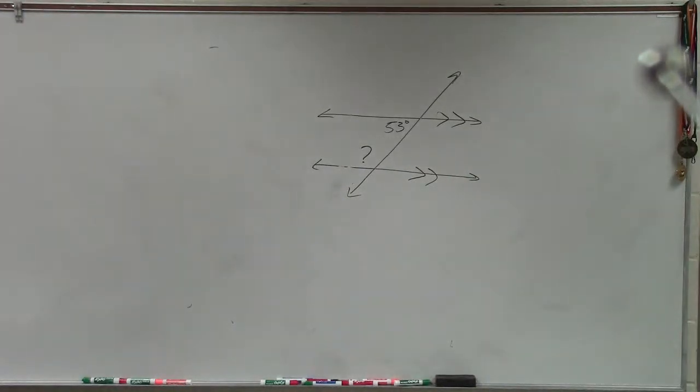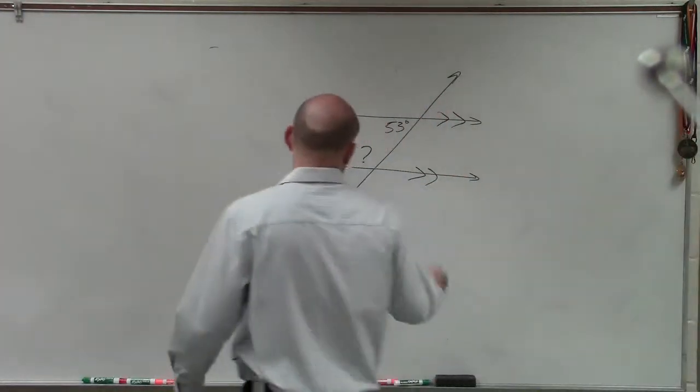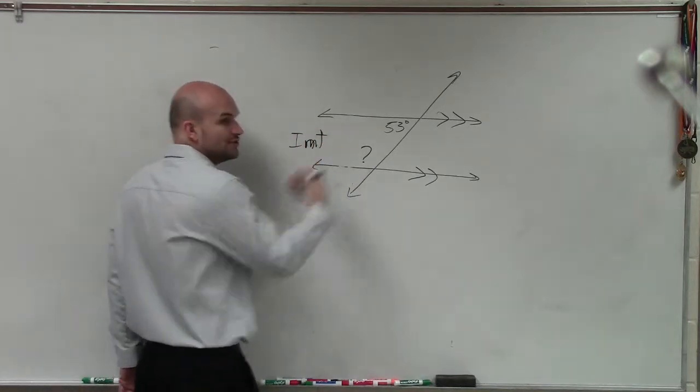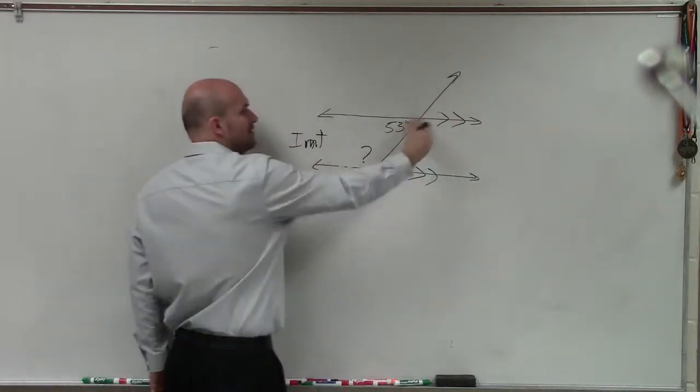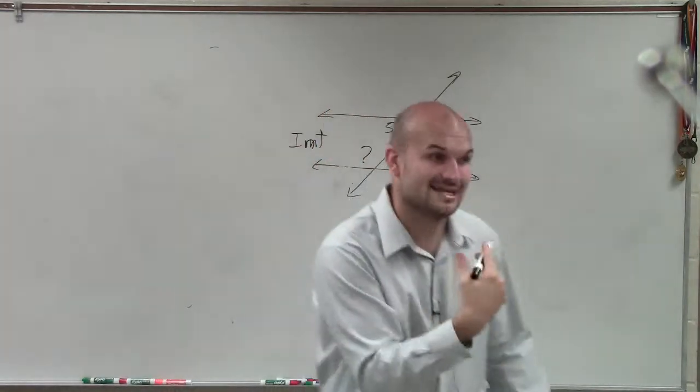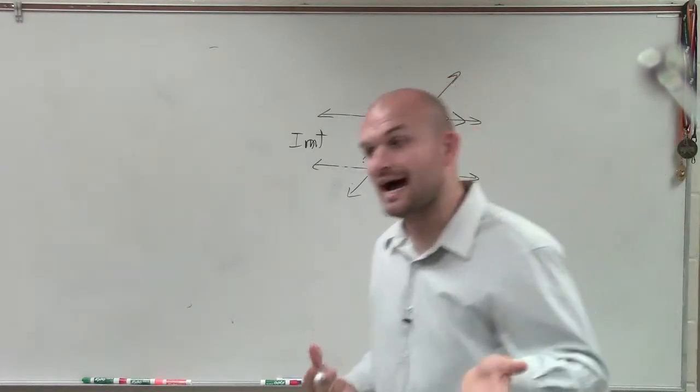Austin's looking at this problem, and what he sees is he says, OK, these are two interior angles, right? Two interior angles of two parallel lines. They're on the same side of the transversal. They're not on alternating sides. They're not alternate interior, but they're on the same side.